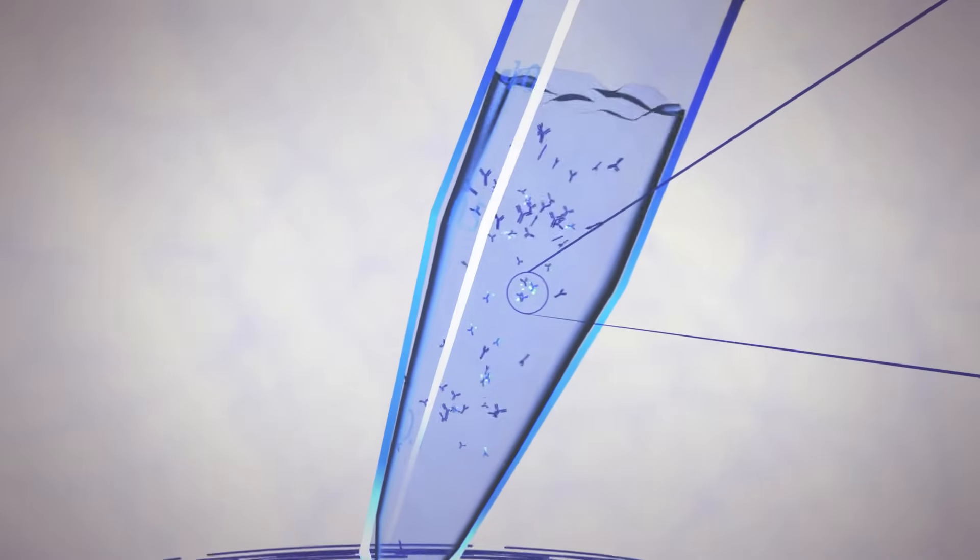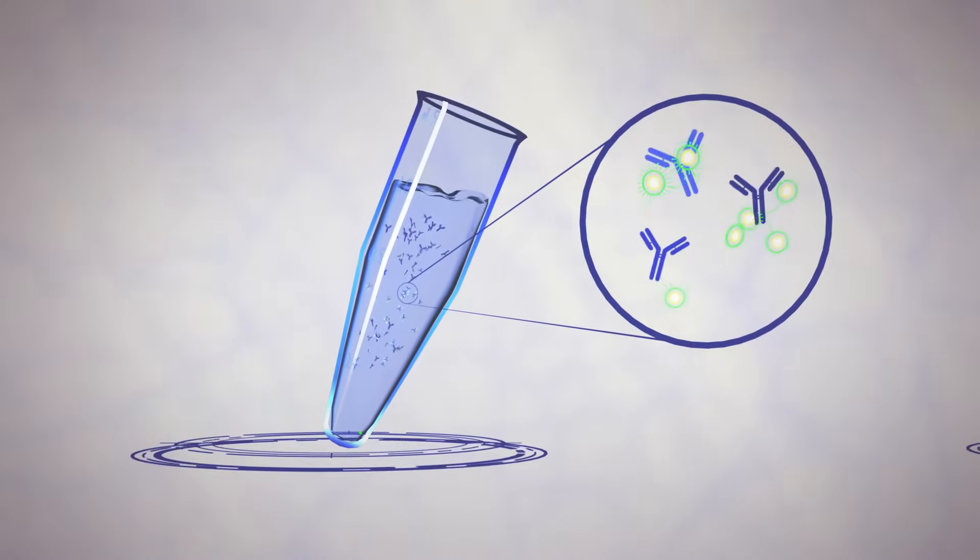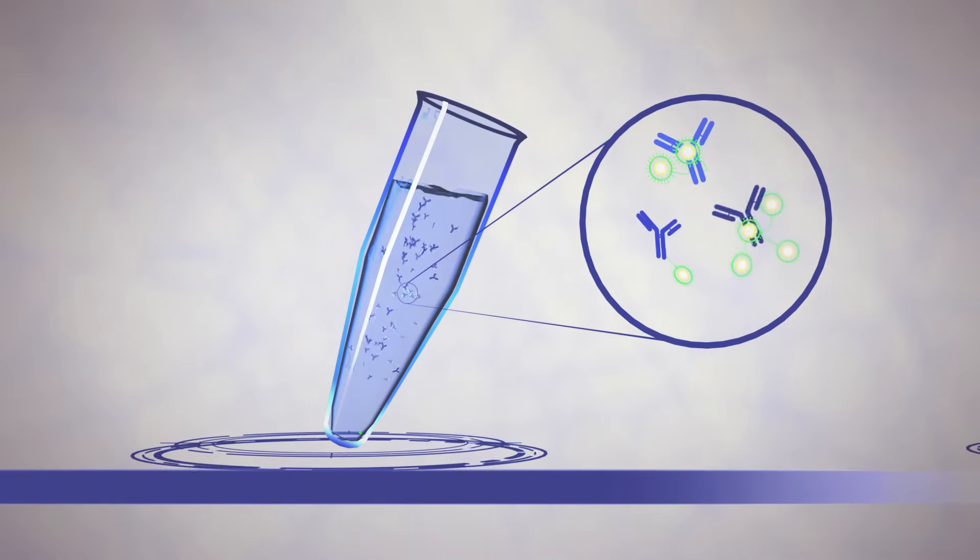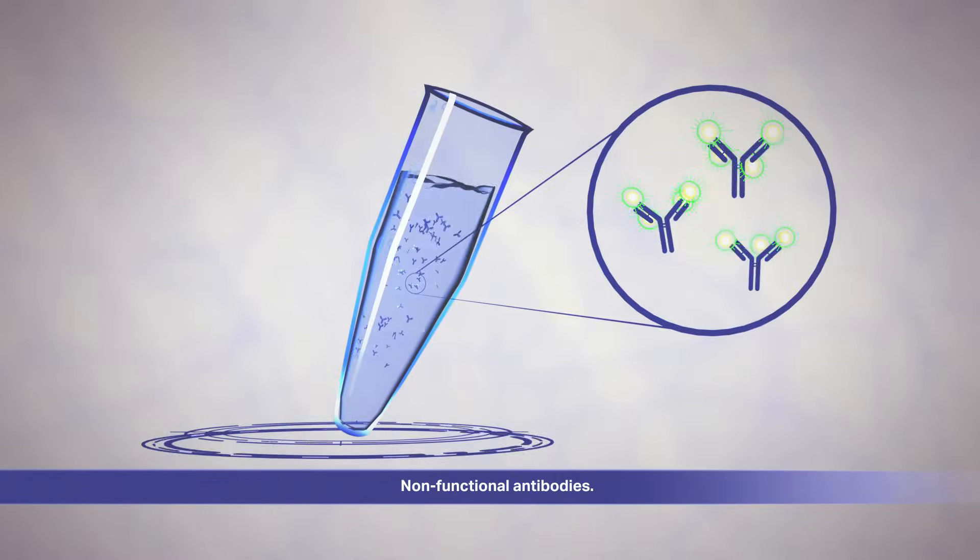This is because most commercial antibody labeling kits provide no control over the site or number of labels per antibody and thus can result in a heterogeneous mixture of antibody conjugates, which can include aggregates and non-functional antibodies.